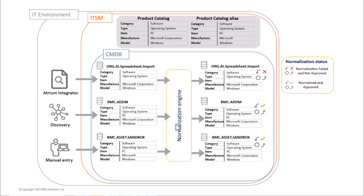This diagram gives a quick overview of the normalization process. We have one product catalog entry for a Windows model and a catalog alias created for the same model where the manufacturer name input is 'Microsoft' but the actual catalog value is 'Microsoft Corporation.' We have three different datasets: a spreadsheet from an integration, ADDM from discovery, and sandbox from manual entry.